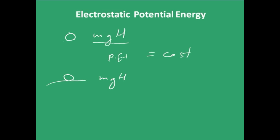Here it is acted only by gravitational force. If any object follows this property — that the sum of potential energy and kinetic energy is constant everywhere — then you can say that the object is acted by a conservative force. So gravitational force is a conservative force, and another example would be a spring force.